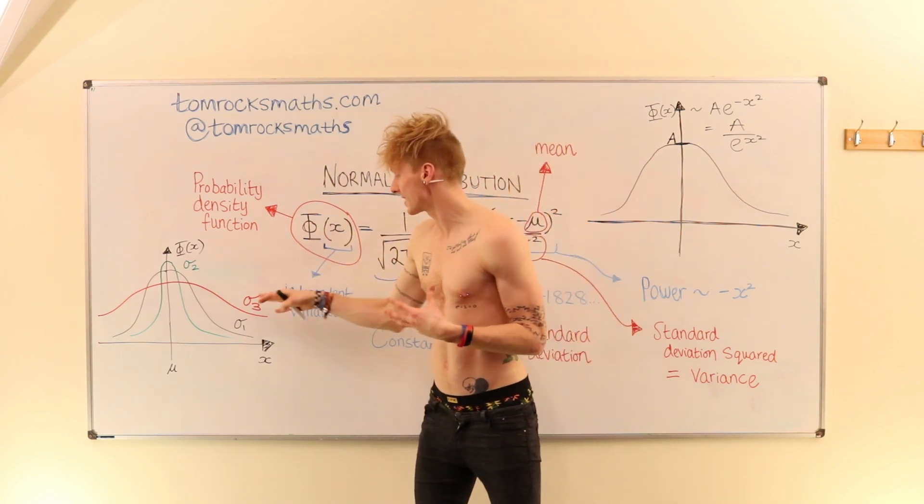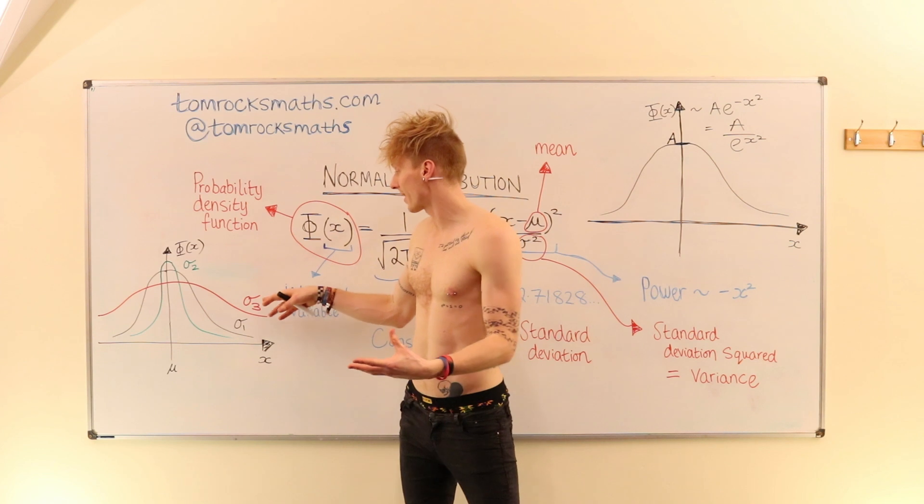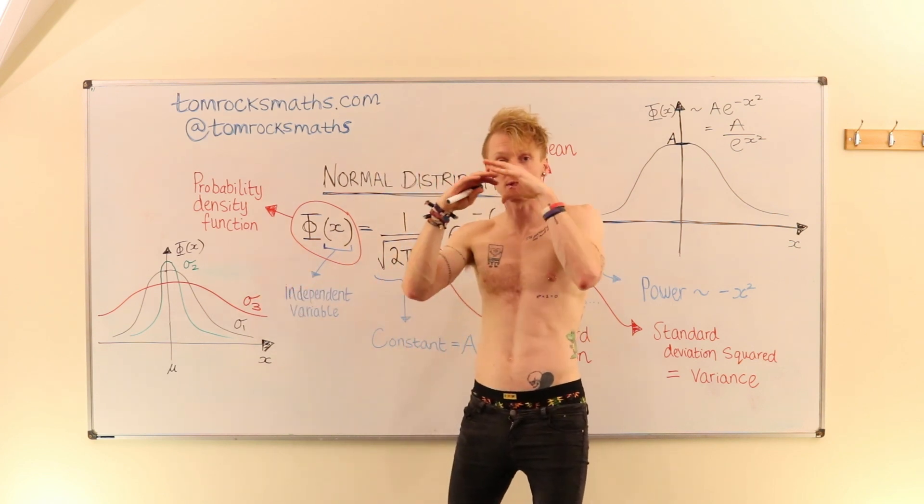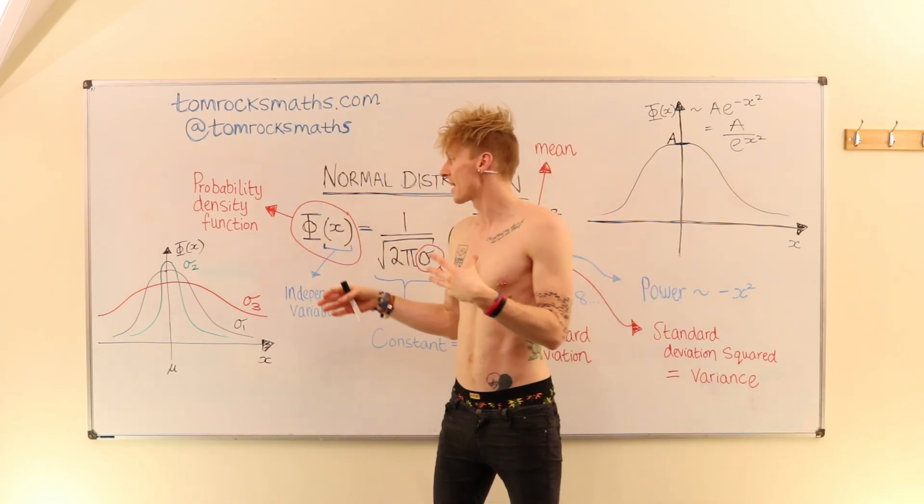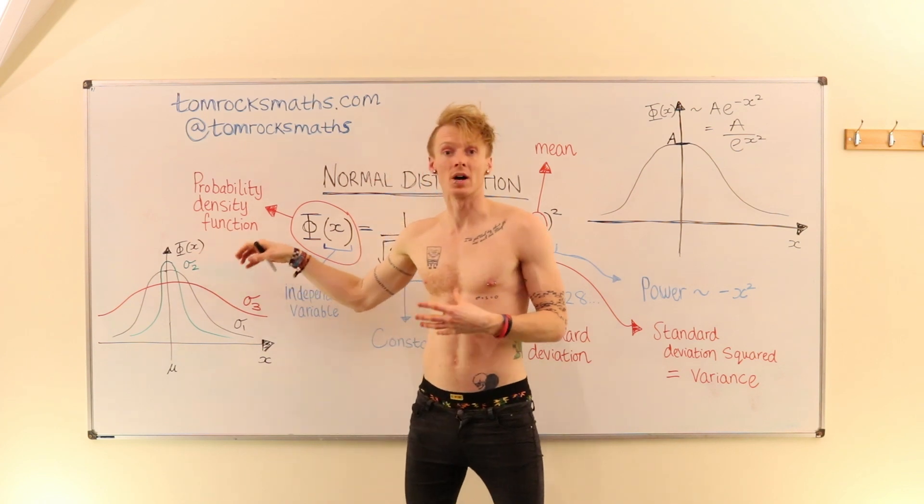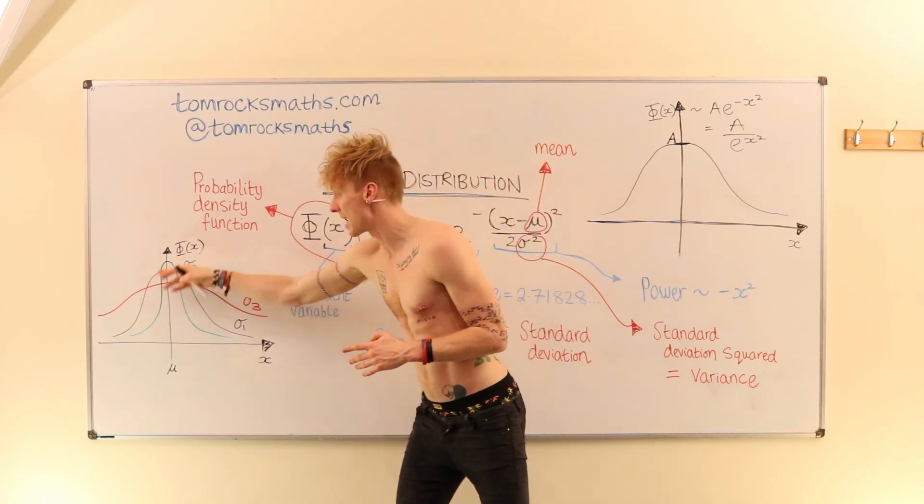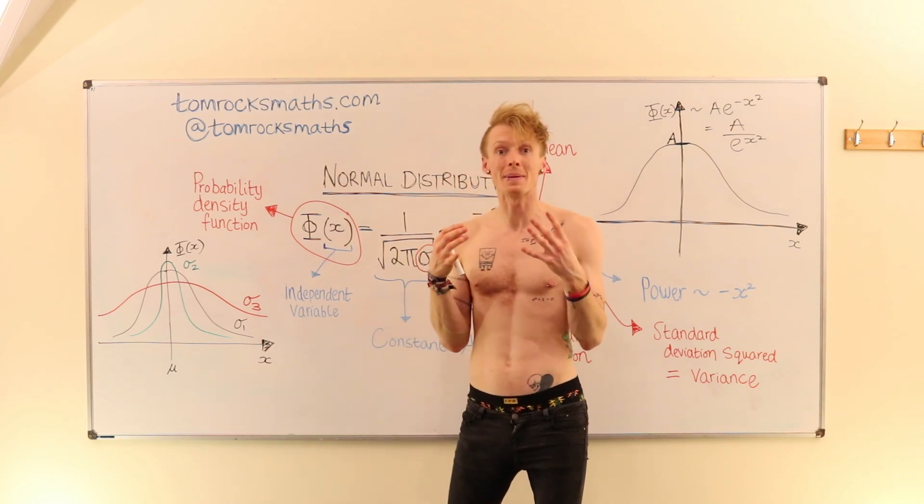So in terms of the standard deviation values, you would have the largest value would be sigma 3, because the data is the most spread out. And the smallest value would be sigma 2, because the data is very concentrated around this central mean peak.